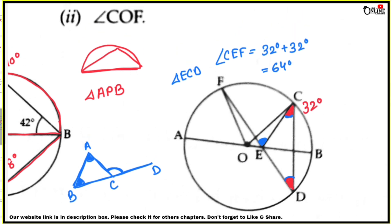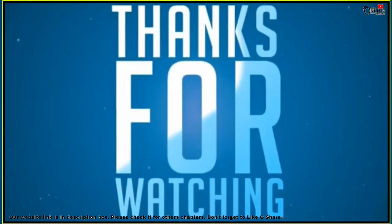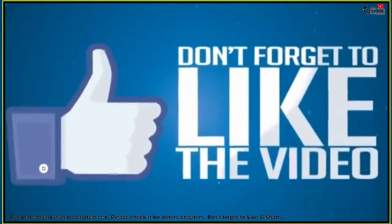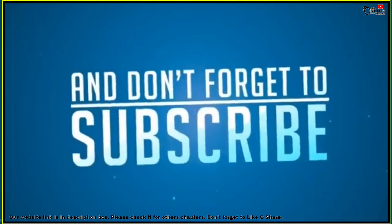Next, find angle COF. Connect the relevant points. Using the central angle theorem and the values obtained, calculate angle COF from the arc and inscribed angle relationships in the circle with center O.